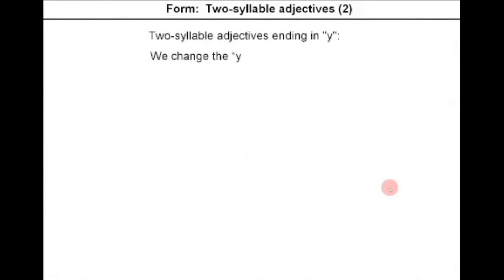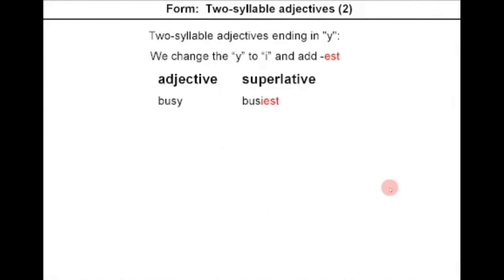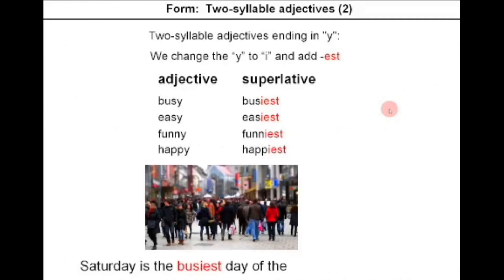For two-syllable adjectives ending in Y, we change the Y to I and add EST. For example: busy → busiest, easy → easiest, funny → funniest, happy → happiest. Example: Saturday is the busiest day of the week for shopping.